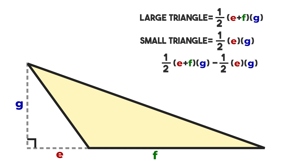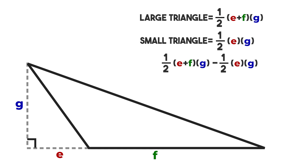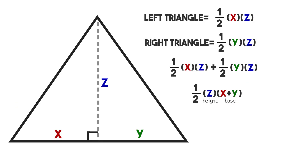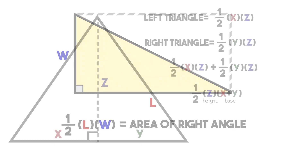So the area of the obtuse triangle is the area of the large right triangle minus the area of the small right triangle. Are there common factors? There are — one half and G. Factoring those out, we get one half G times the quantity E plus F minus E. The E's cancel, and we get one half G — our height — times F, which is the base of the obtuse triangle. Here again, the same formula for an obtuse triangle as for an acute triangle and a right triangle.